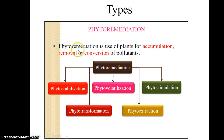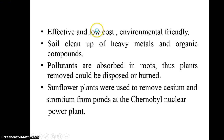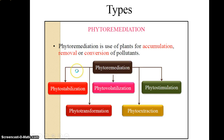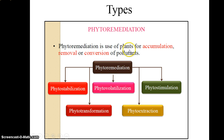Now we are going to see the types of phytoremediation. There are several types based on contaminant fate. Generally there are five types: phytostabilization, phytovolatilization, phytostimulation, phytoextraction, and phytotransformation. In these types, contaminants are accumulated, removed, converted, or destroyed.